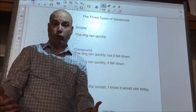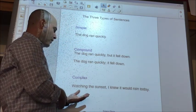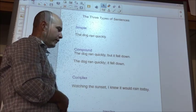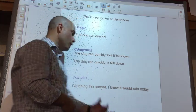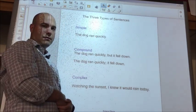The third type of sentence is not one that you need to worry about today. But it will come back. It's called a complex sentence. Watching the sunset, I knew it would rain today. Dependent clause, independent clause.